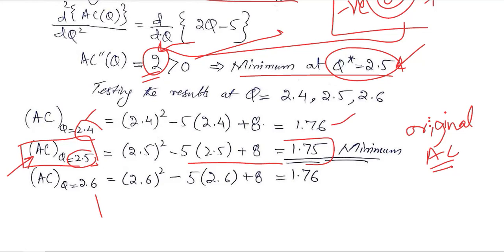When we used q equals 2.4, the average cost was 1.76, which is higher than 1.75. When we used q equals 2.6, the average cost was again 1.76, also greater than the minimum of 1.75. So 1.75 is confirmed as the minimum, verified both by the second order condition and by numerical experimentation.